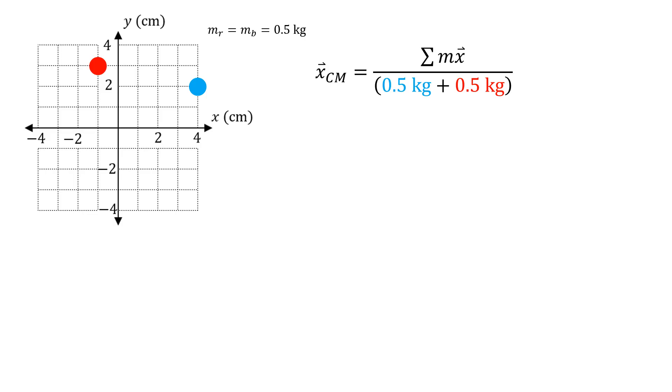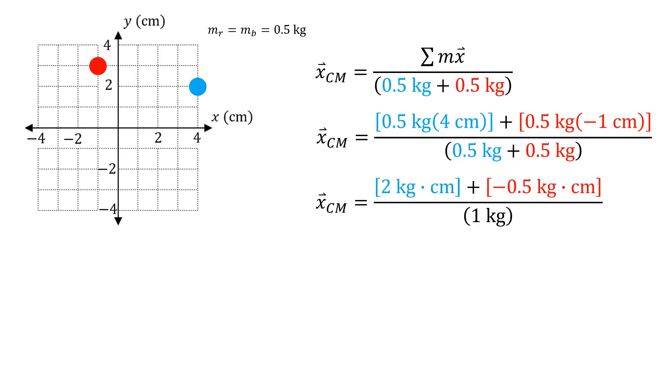To find the center mass, we're going to find the x position first. Plugging in the two masses in the denominator, and then m times x for each one in the numerator. So 0.5 kilograms times an x position of 4 centimeters, and repeat that for a position of negative 1 centimeter for the red thing. Doing some simplification, you get 1.5 over 1, which reduces to 1.5. The x center of mass must be at an x coordinate of 1.5 centimeter. I can't make that a dot just yet, but I can make it into a line. Somewhere along that line is where I'm going to find the center of mass.